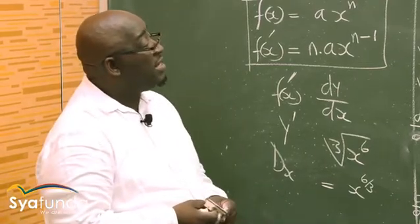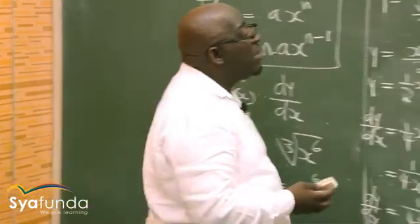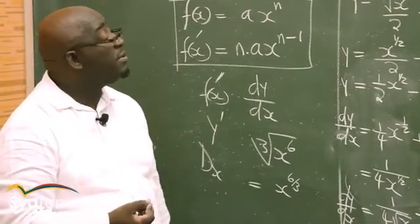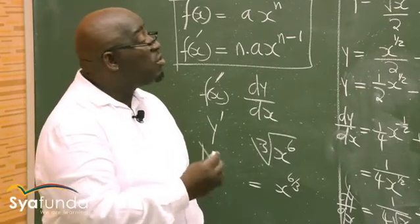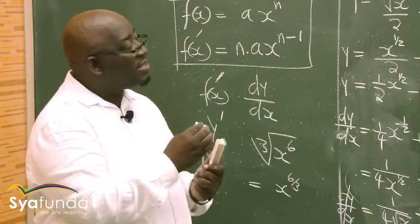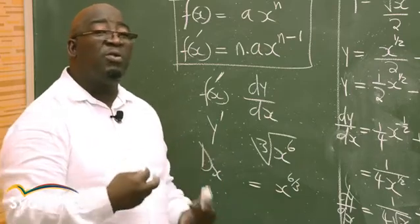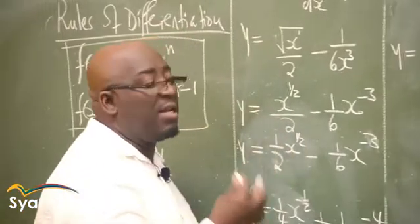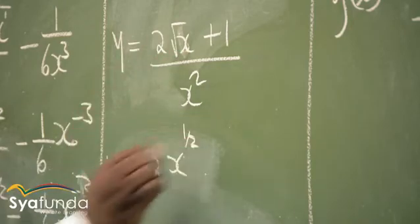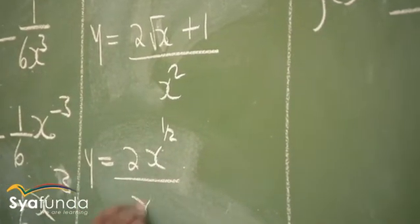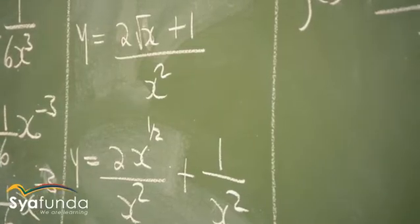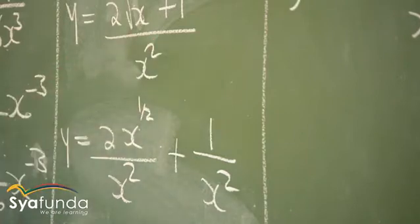The second problem is from the March 2013 national examination, Question 9.2: determine dy/dx given the expression (2√x + 1)/x². We note that both terms in the numerator are divided by x², so we split the fraction: 2√x/x² + 1/x².